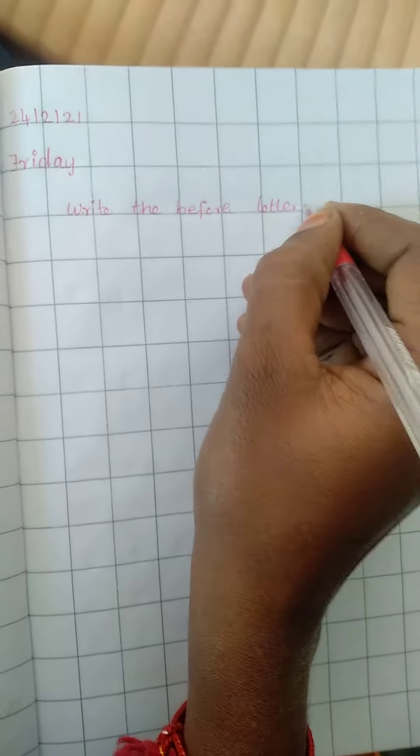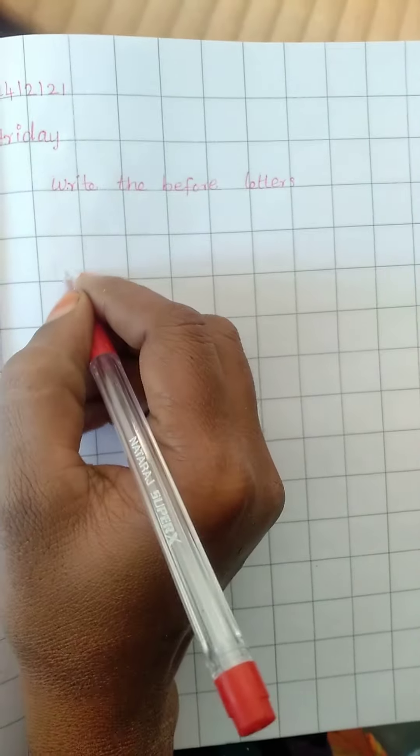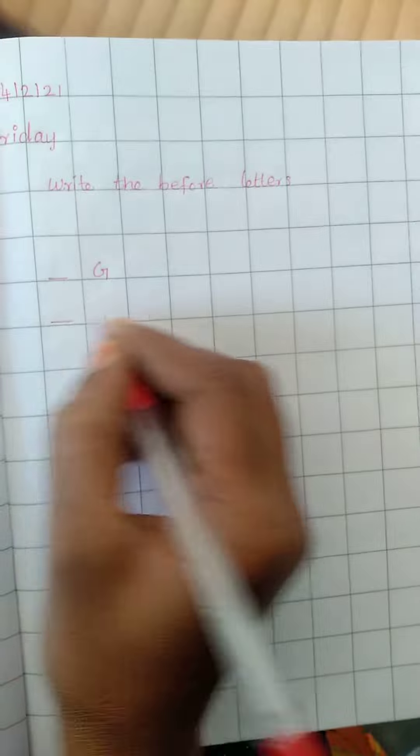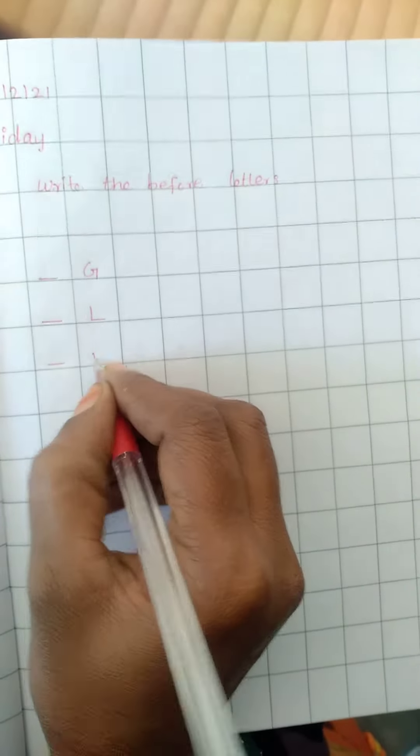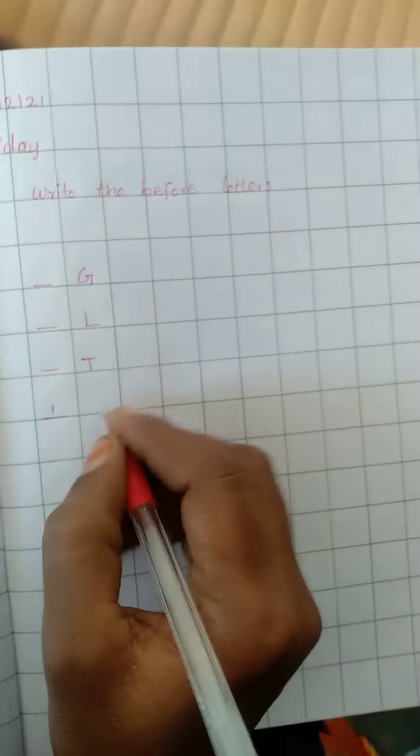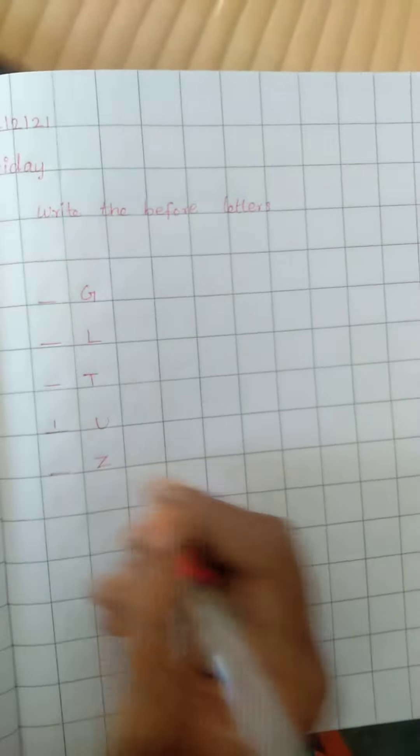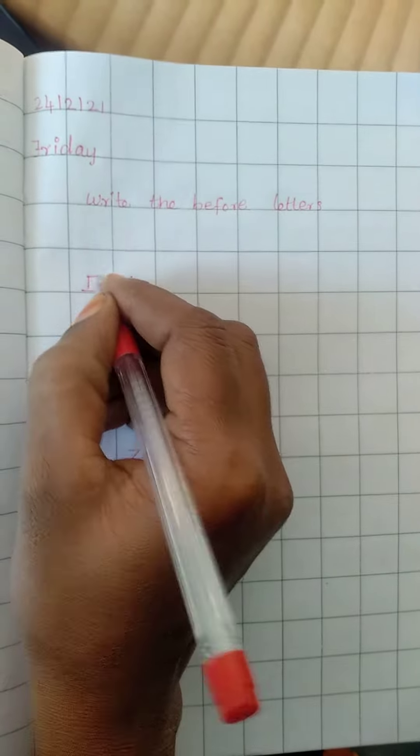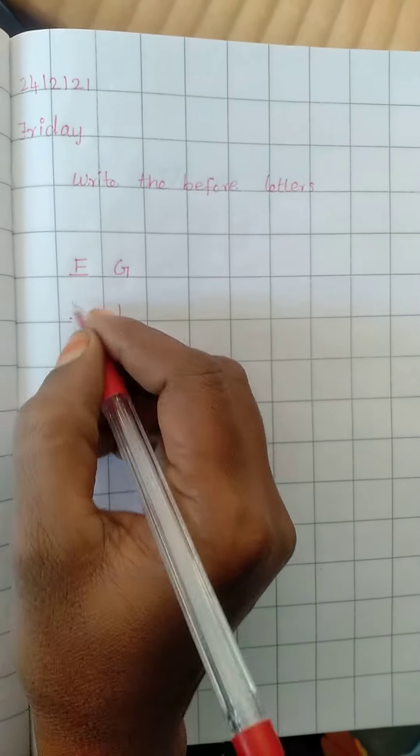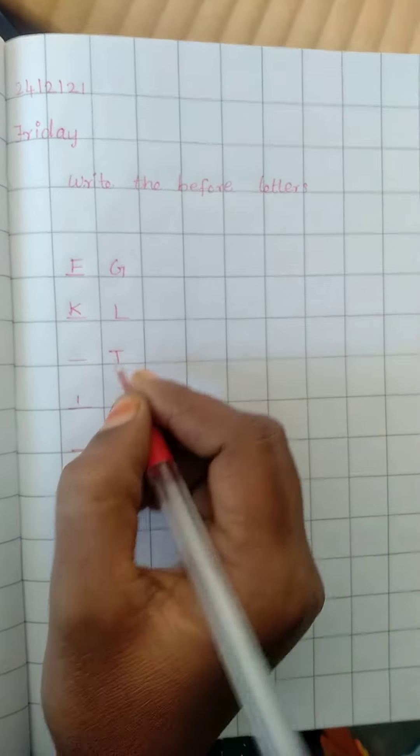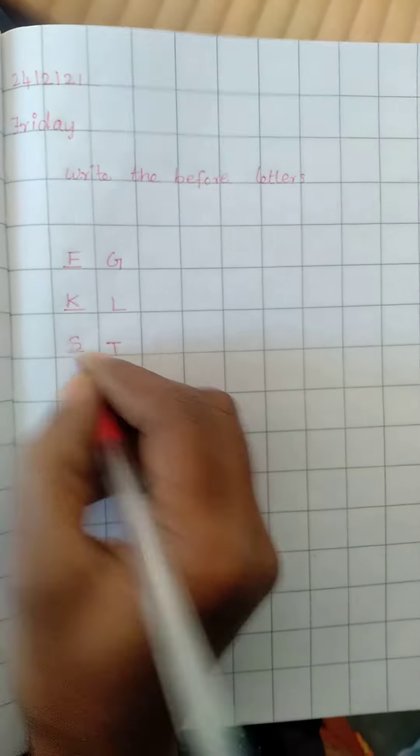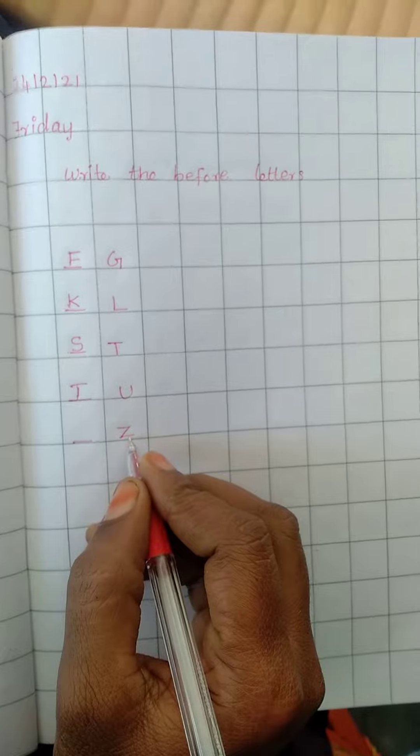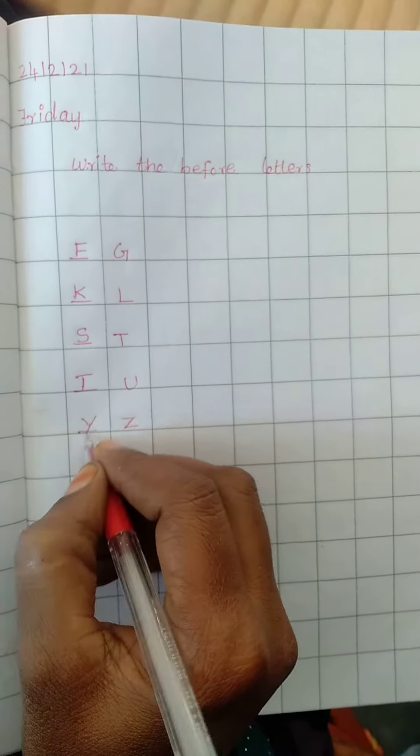Say the before letters. Okay. E, U, Z. Say G before letter: L. Very good. L before letter: K. P before letter: S. U before letter: T. Z before letter: Y. Okay.